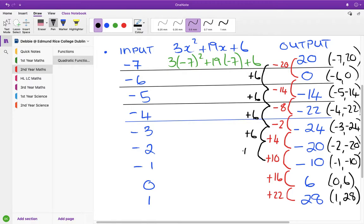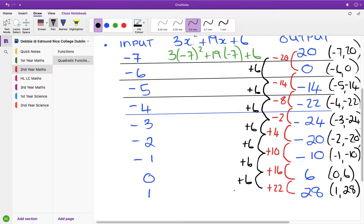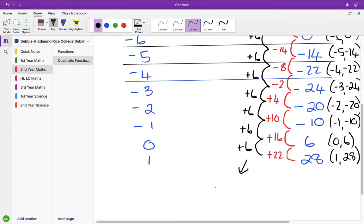Minus 2 to 4 is 6. 4 up to 10, that's plus 6 again. 10 to 16 is plus 6. And 16 to 22 is plus 6. So we have a constant second difference, which once again proves that it's quadratic.